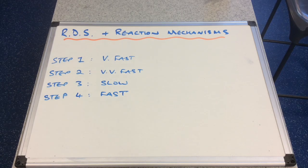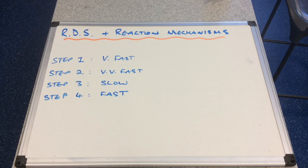In this video I'm going to look at the rate determining step, or RDS for short, and we're going to link it to reaction mechanisms. Most chemical reactions don't just occur in one step; they occur in a sequence of steps which we call reaction mechanisms, and we've come across those in organic chemistry.